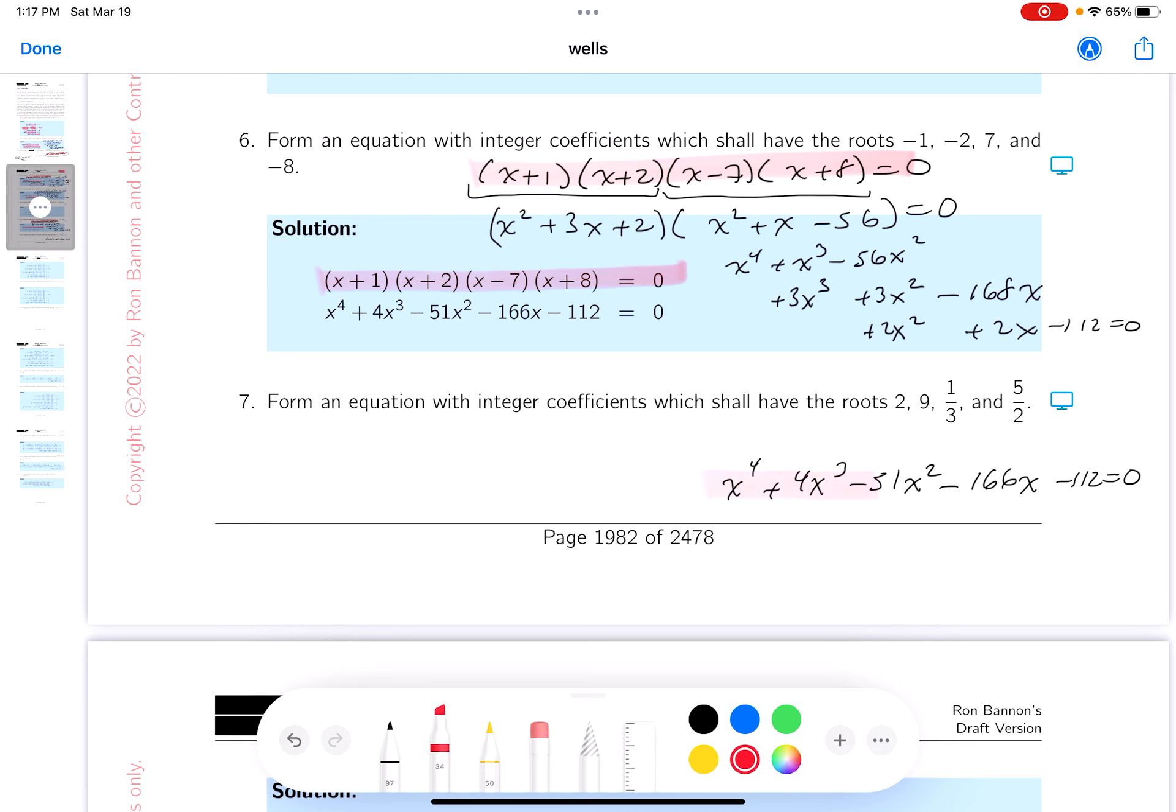All right, let's see if we got it. I see that. Are they the same? x4, 4x cubed, minus 51x squared. Yeah, we did okay. That's good.